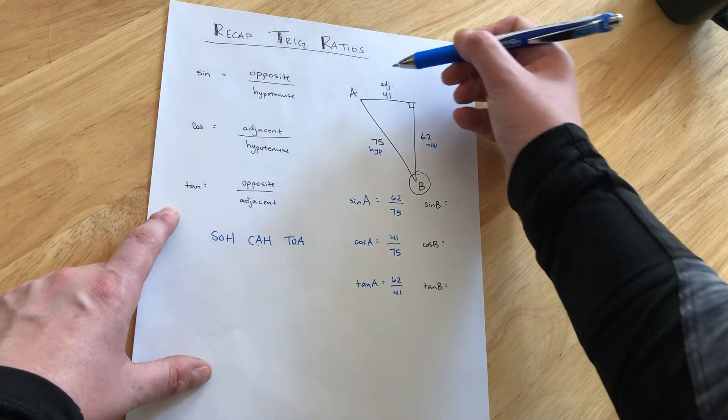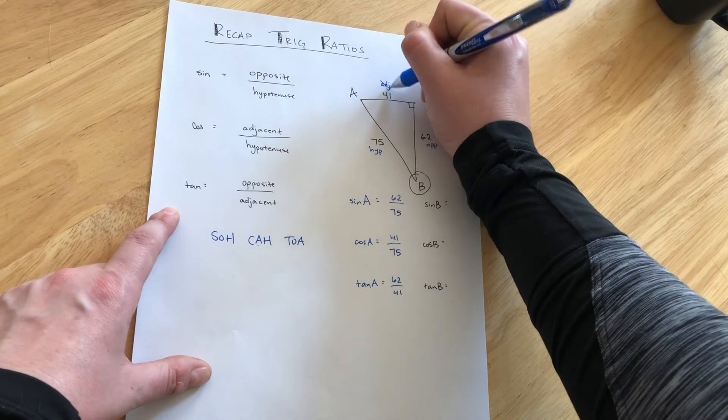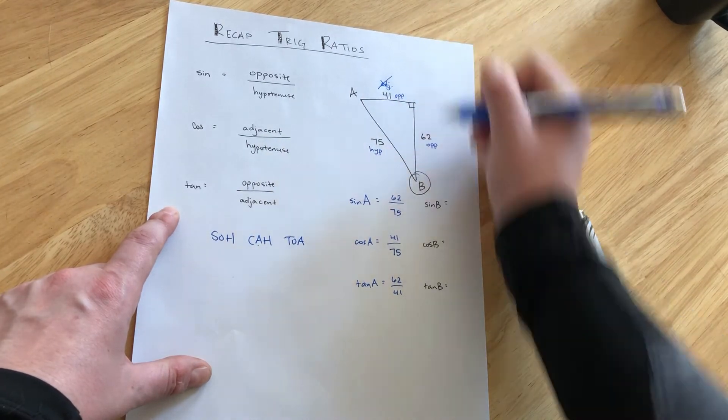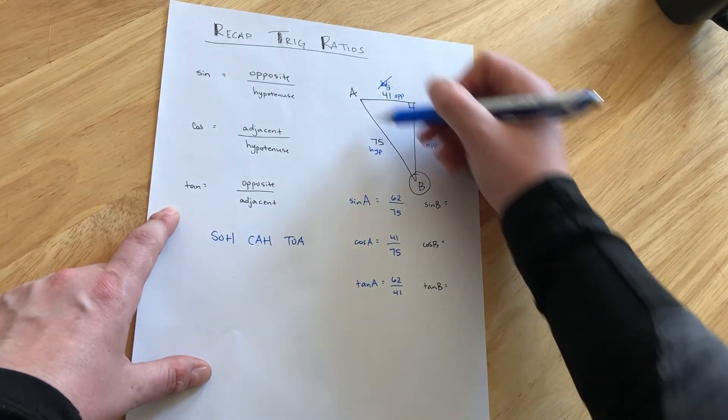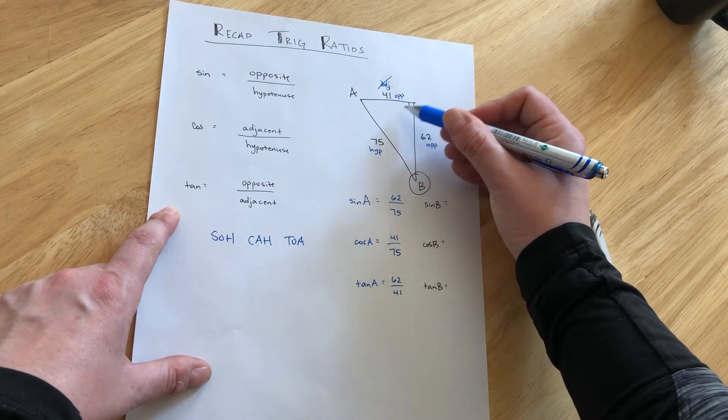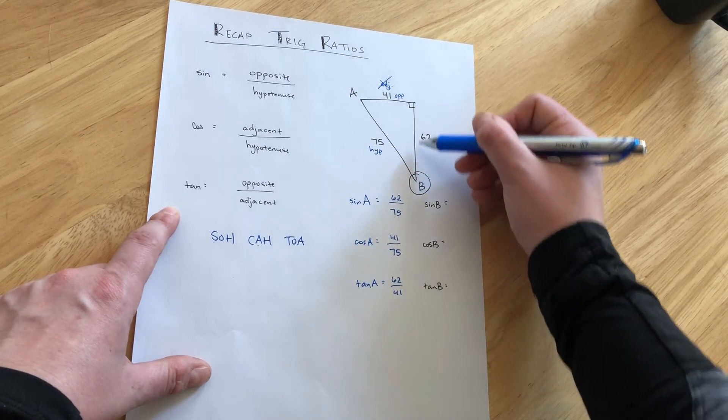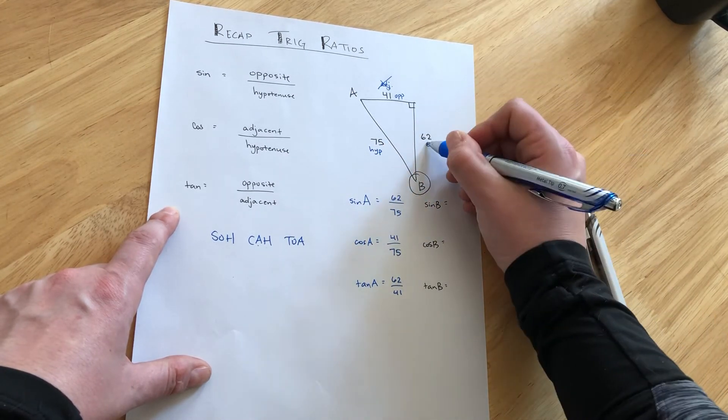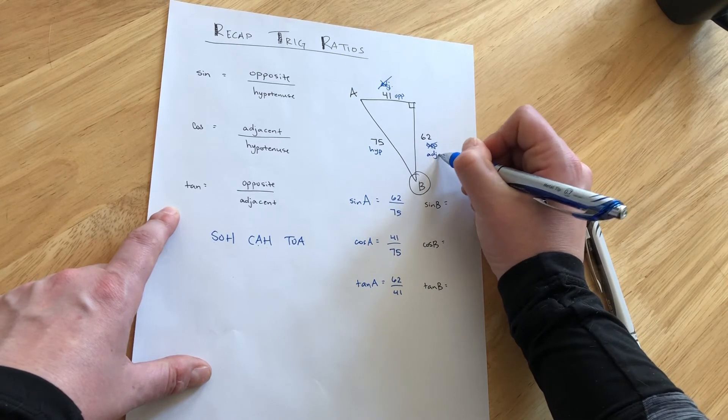The side opposite from angle B is now the 41 side. The hypotenuse doesn't change, it's still across from the right angle. But now this 62 side is actually adjacent to angle B. So the names switch when we change angle perspective.